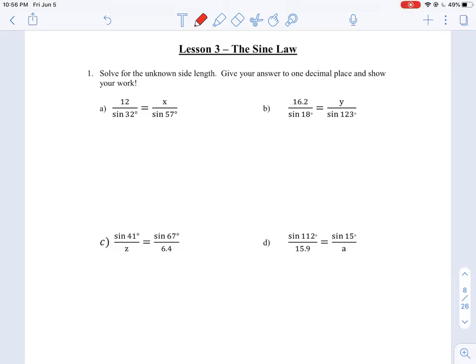In this video, let's take a look at how you can solve for simple unknowns using the sine law. If we take a look at the first question here where we have 12 over sine 32 degrees is equal to x over sine 57.